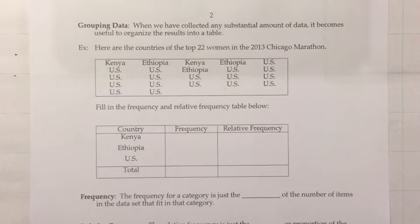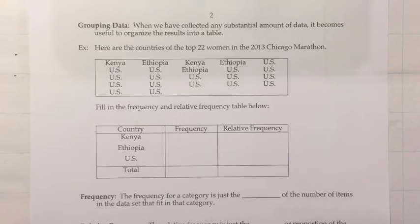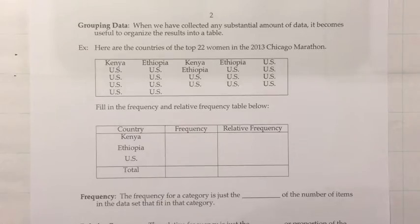Now that we've seen the different types of data, we're going to look at grouping data. When we've collected any substantial amount of data, it becomes useful to organize the results into a table. The way this works will vary slightly depending on whether our data is categorical or numerical. We're going to focus on categorical data for now.